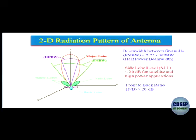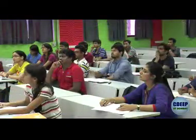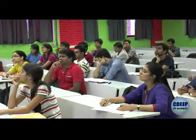Side lobe levels are generally preferred to be less than 20 dB. Twenty dB corresponds to 1 percent — meaning about 1 percent of the forward power is transmitted in other directions. For satellite communication, the required beam width is of the order of 2 degrees. If the beam is too broad or side lobe levels are too high, the antenna can receive signals from adjacent satellites. That is why we generally keep a gain margin of at least 10 dB for satellite communication.